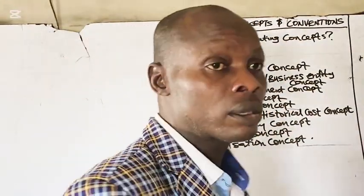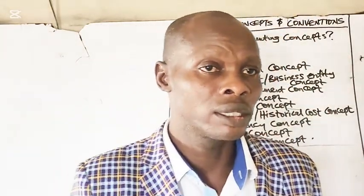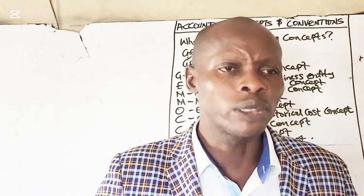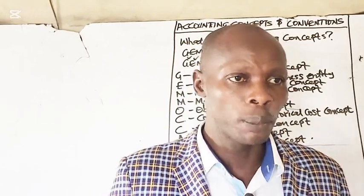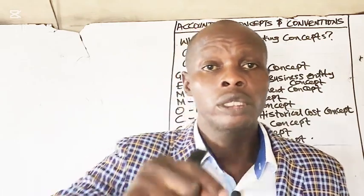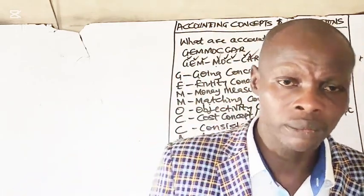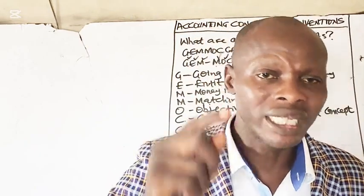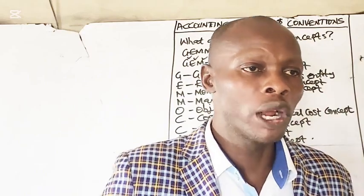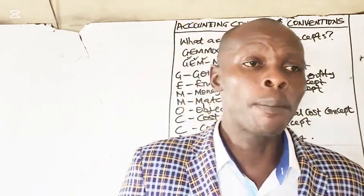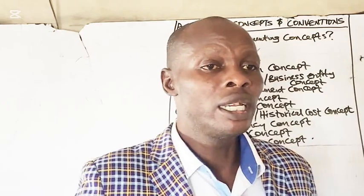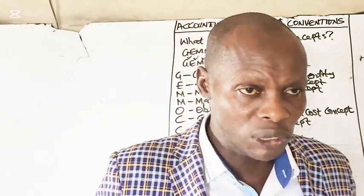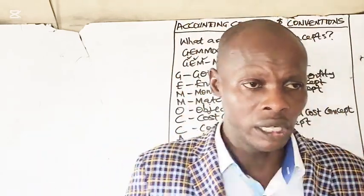Number seven: consistency concept. This states that accounting methods should be applied consistently from period to period. Once a method has been chosen, it must be applied consistently, so that comparisons can be made between one period and another.